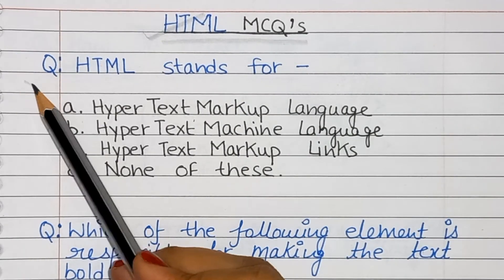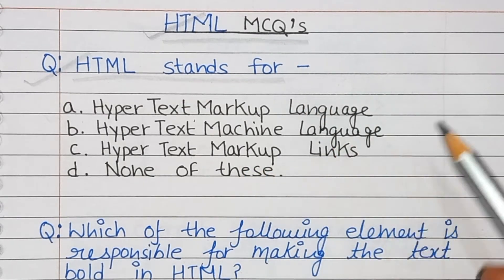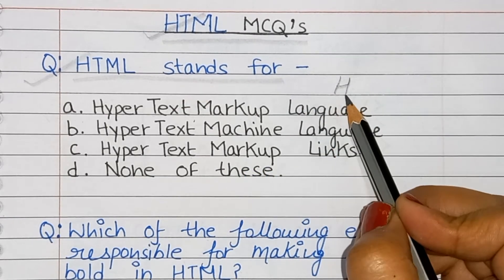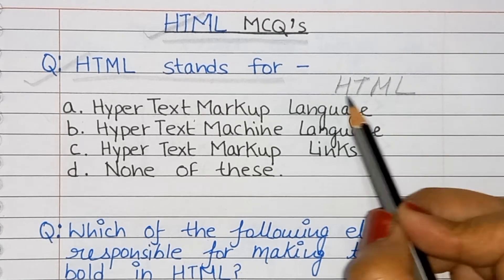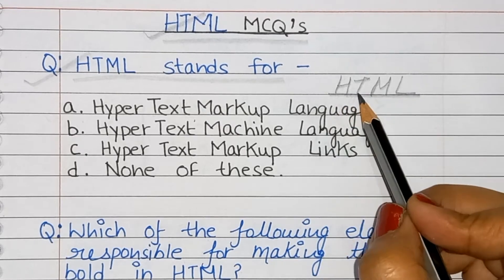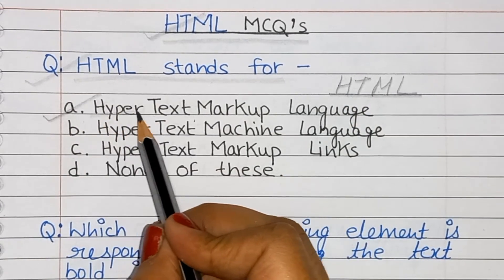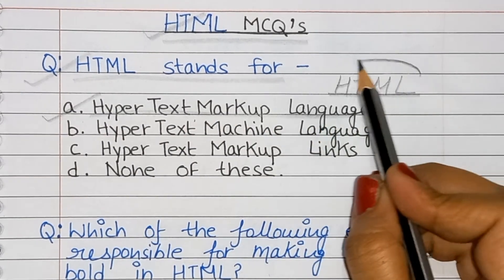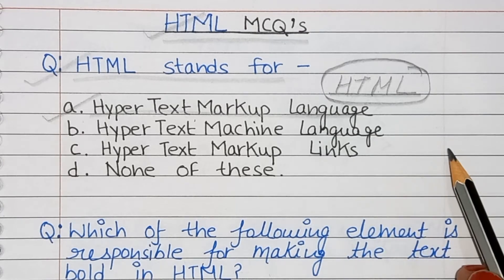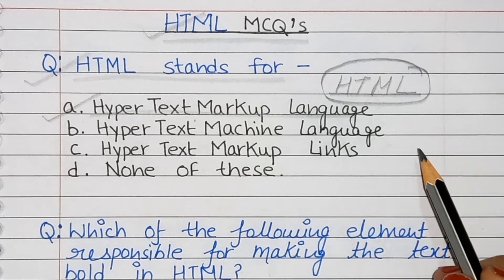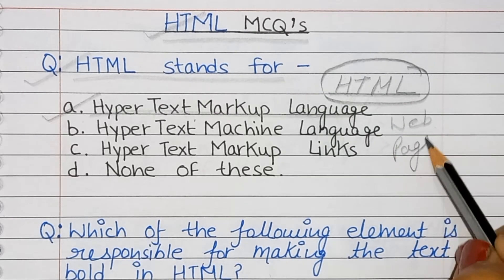First question: HTML stands for — what is HTML's full form? H for Hyper, T for Text, M for Markup, L for Language — Hyper Text Markup Language, option A. HTML is used to create web pages and web applications.